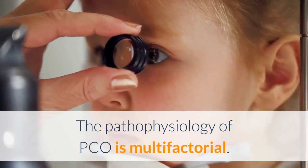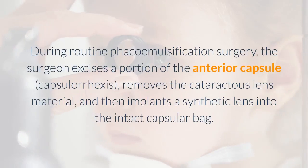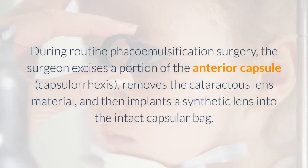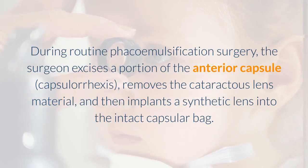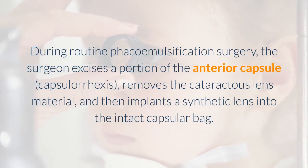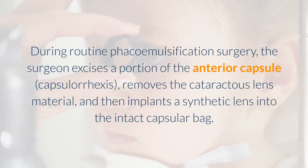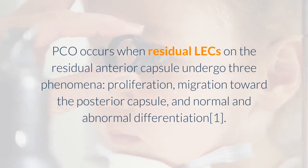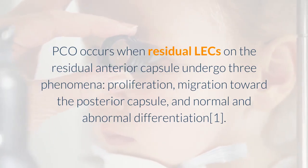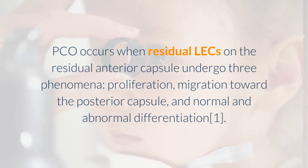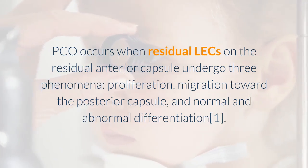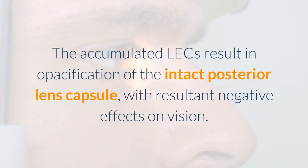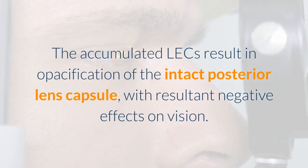The pathophysiology of PCO is multifactorial. During routine phacoemulsification surgery, the surgeon excises a portion of the anterior capsule, removes the cataractous lens material, and then implants a synthetic lens into the intact capsular bag. PCO occurs when residual LECs on the residual anterior capsule undergo three phenomena: proliferation, migration toward the posterior capsule, and normal and abnormal differentiation. The accumulated LECs result in opacification of the intact posterior lens capsule, with resultant negative effects on vision.